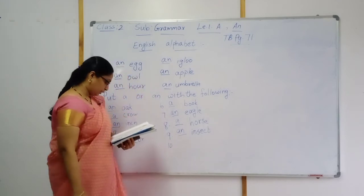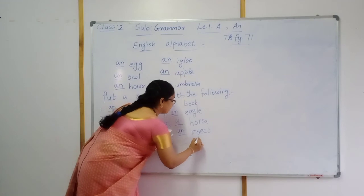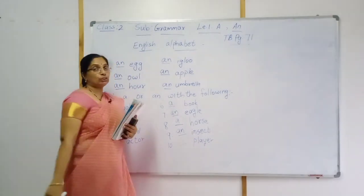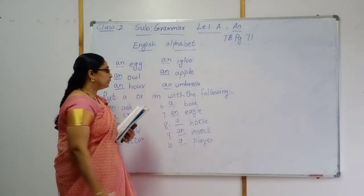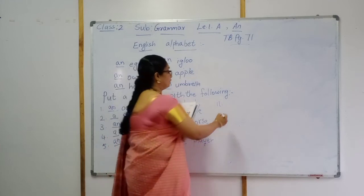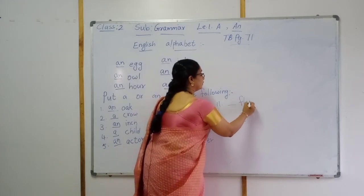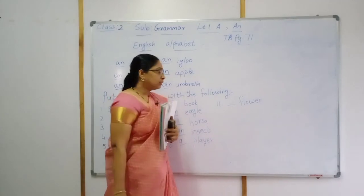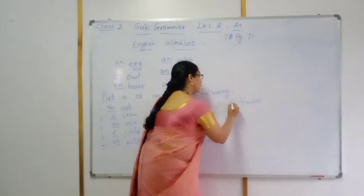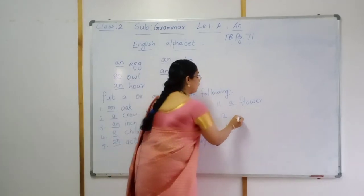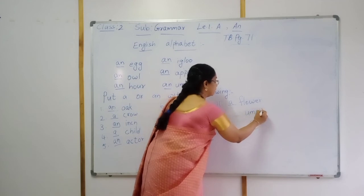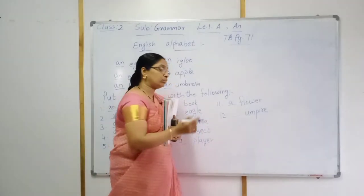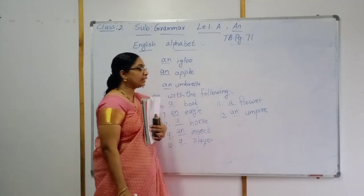Number ten — player. First letter P, that is a consonant sound, so A player. Number eleven — flower. First letter F, is that consonant or vowel sound? Consonant sound. So A flower. Number twelve — umpire. First letter U, that is a vowel sound, so AN umpire.